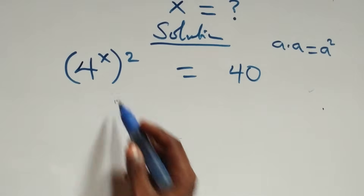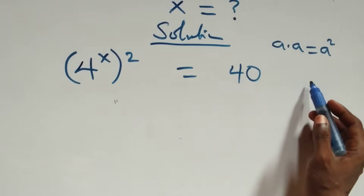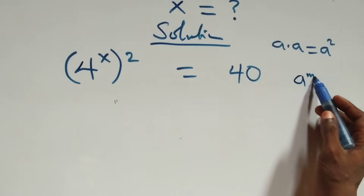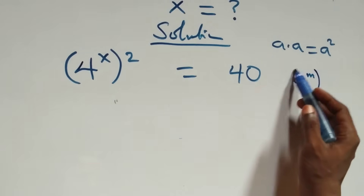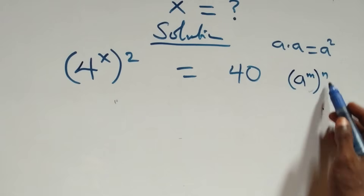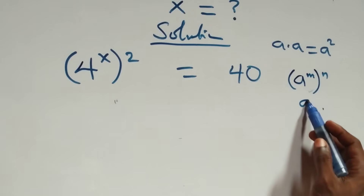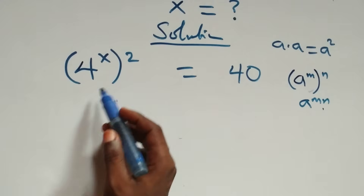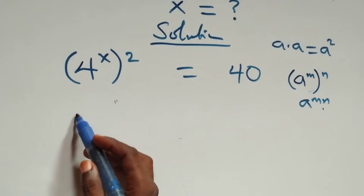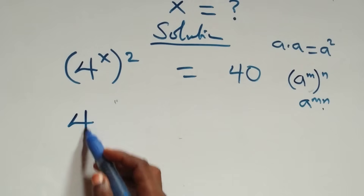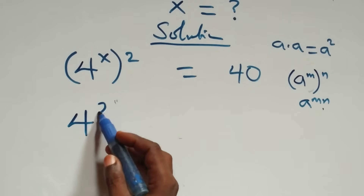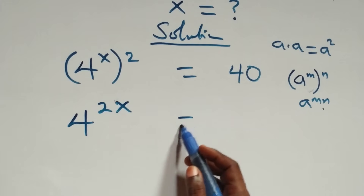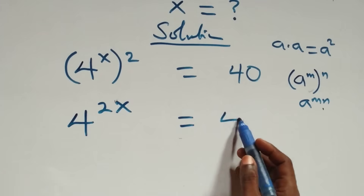This follows the law of indices: when we have a raised to power n, raised to power m, this is the same thing as a raised to power mn. So this power multiplies and we have four raised to power two x equals to forty on this side.